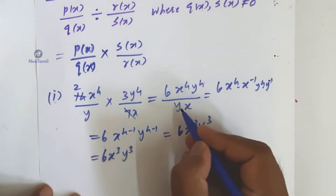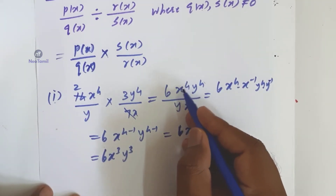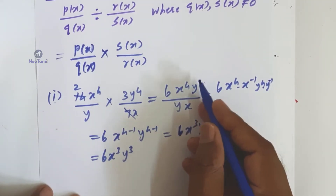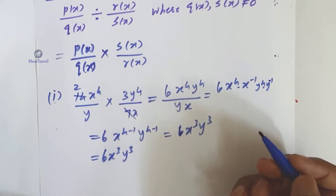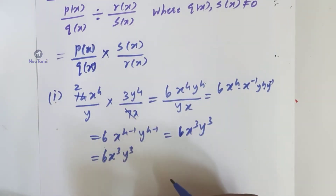If you cancel directly, you can cancel to get x to the power 3, y to the power 3, arriving at the same final answer.